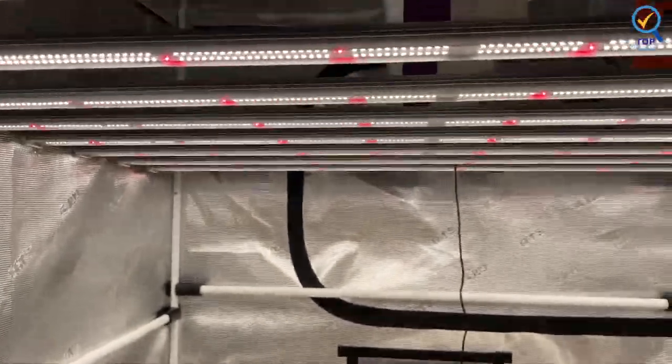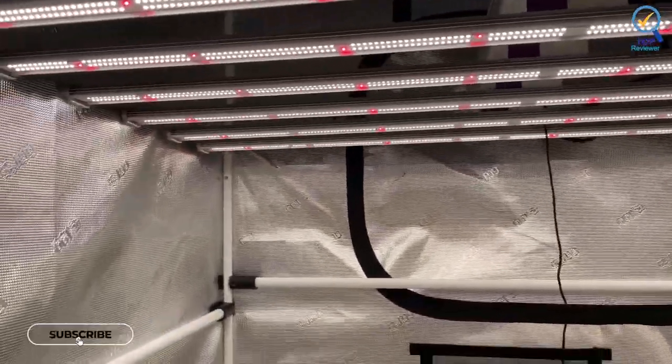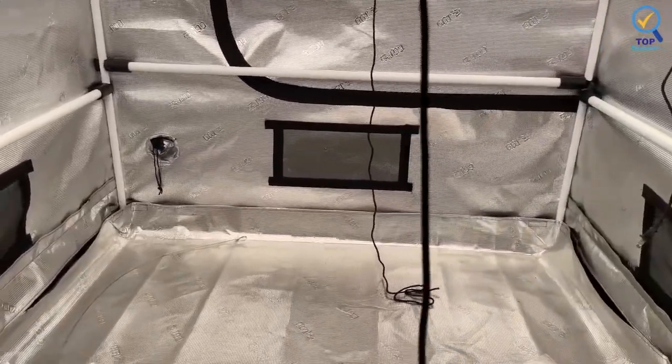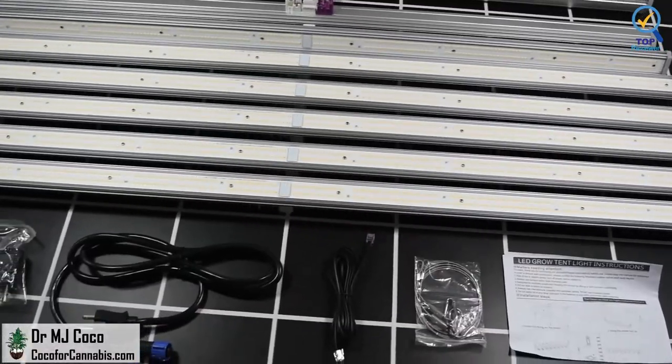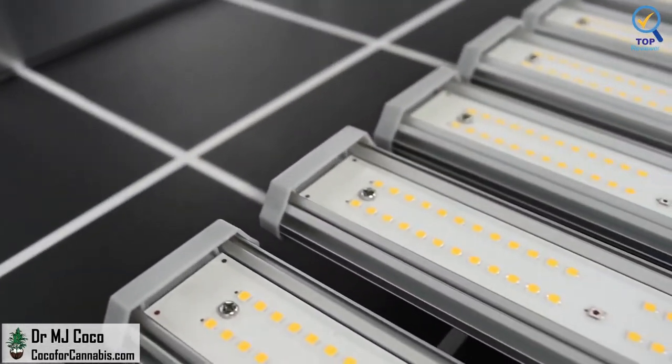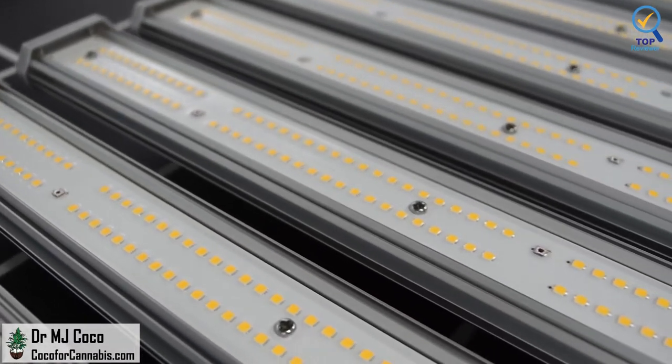Additionally, the μmol/J is crazy efficient at 2.7. It is equipped with durable and reliable heavy-duty aluminum housing material, which allows work in harsh commercial growing conditions with a lifespan of up to 50,000 hours. It can magnificently improve the light coverage and your planting efficiency.